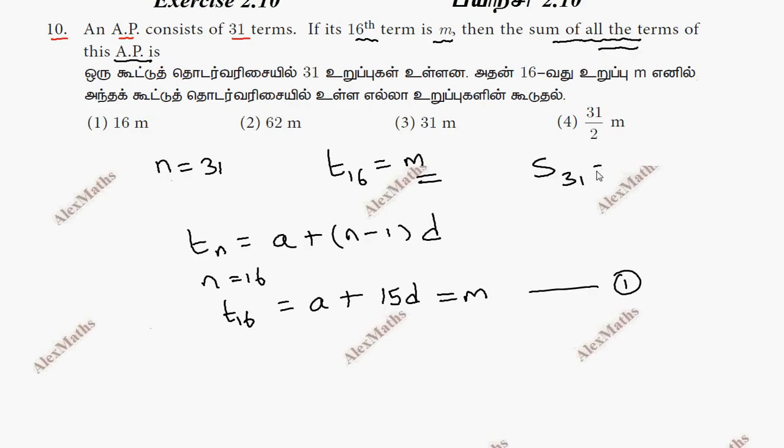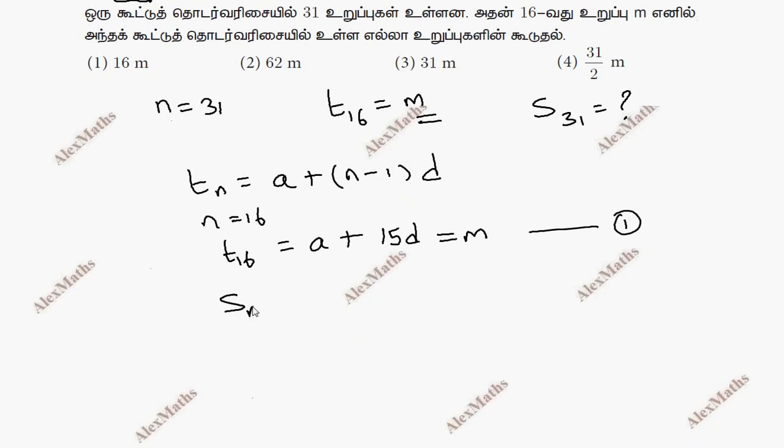S31 equals how much? Now we have to write the Sn formula. Sn equals n by 2 into 2a plus n minus 1 into d. Now we have to write S31, so S31 equals...